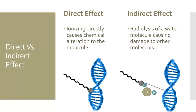A radiation hit can occur through direct or indirect energy transfers. A direct effect occurs when the radiation directly strikes the molecule, causing damage. Indirect effect, also known as indirect hit theory, is when the radiation strikes a water molecule. As we learned in the last video, the human body is made up of 80% water, and cells themselves are filled with cytoplasm, which is mostly water. This means the likelihood of damage from indirect effect is greater than the chance of direct effects.